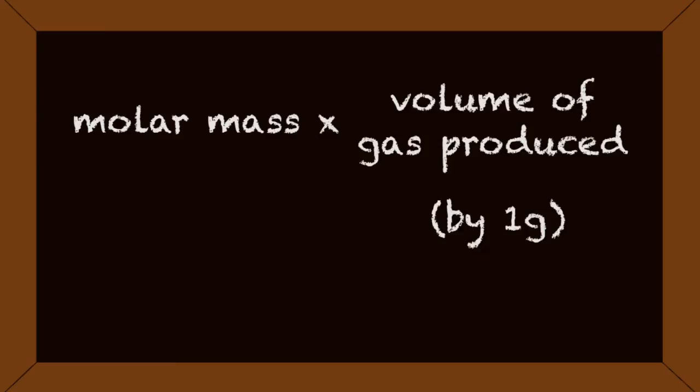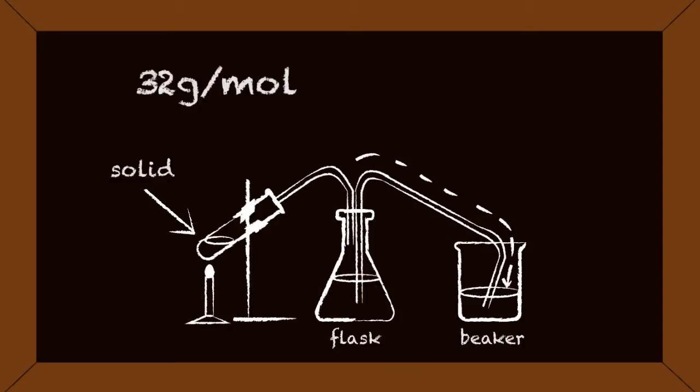Finally, by multiplying the molar mass of oxygen by the volume of gas produced by 1 gram of oxygen molecules, you can calculate the experimental molar volume for oxygen gas. This you do by multiplying 32 grams per mole by 0.753 liters.